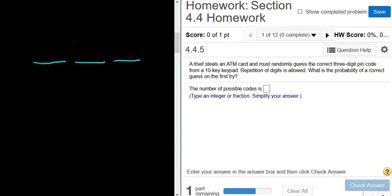This is a multiplication rule problem because in order to create a three-digit PIN code we have to do three things. We have to pick the first digit, pick the second digit, and pick the third digit. So we can use the multiplication rule to figure out how many ways to pick all three.